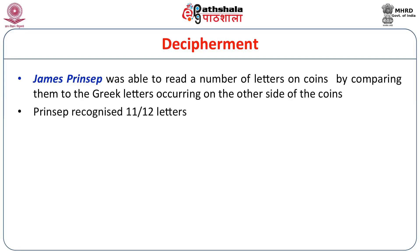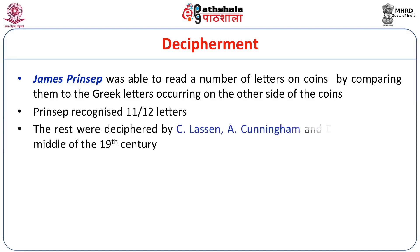James Prinsep could recognize only 11 to 12 letters. The rest were later deciphered by C. Lassen, A. Cunningham, and E. Norris by the middle of the 19th century.